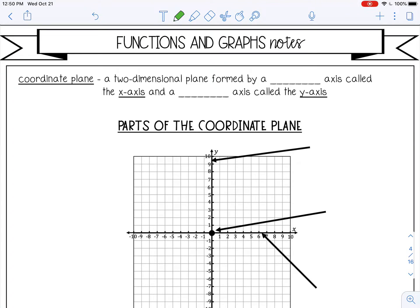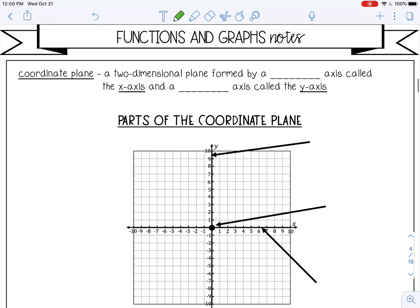Welcome to this lesson on functions and graphs. Let's review the coordinate plane. The coordinate plane is a two-dimensional plane formed by a horizontal axis called the x-axis and a vertical axis called the y-axis.